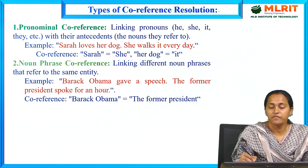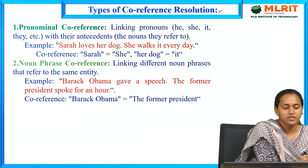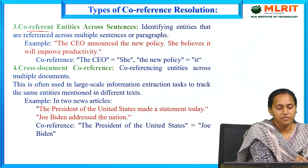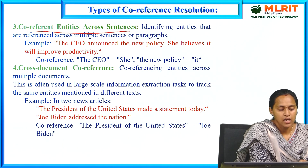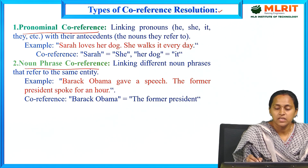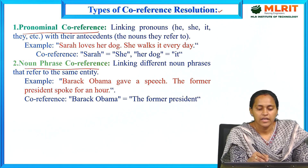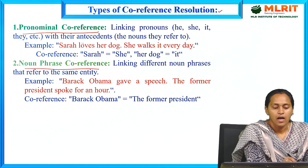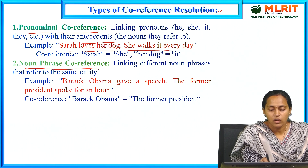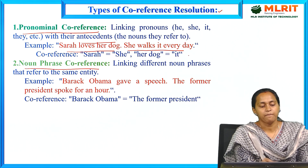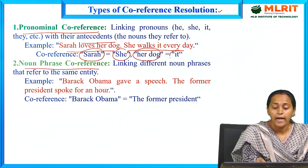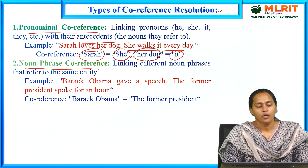The types of coreference resolution are: pronominal coreference, noun phrase coreference, coreferent entities across sentences, and cross-document coreference. In pronominal coreference, pronouns are linked to their antecedents. For example: 'Sarah loves her dog. She walks it every day.' Here, 'she' refers to Sarah and 'it' refers to the dog.